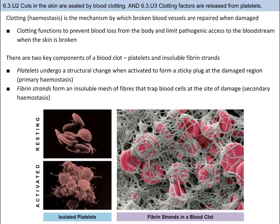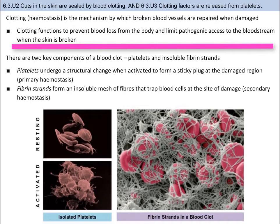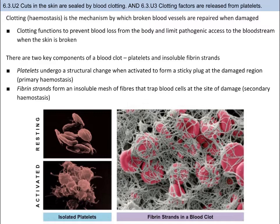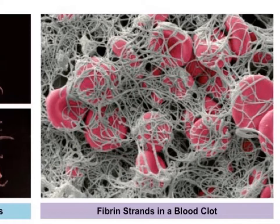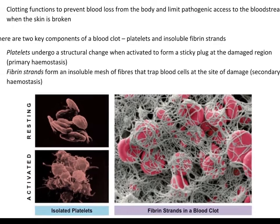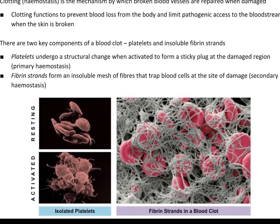So what happens when our first line of defense gets pierced and cuts occur in the skin? Our body works to respond and stop the bleeding. The term clotting is the specific mechanism for how broken blood vessels are repaired when they get damaged. It's important to repair the skin, as the blood system is the transport system of our body — if an invader gets on board, they can move throughout the body. There are two huge benefits to blood clotting when the skin is cut: the first is to prevent blood loss, and the second is to limit the access to the bloodstream by pathogens. The components of blood clots are platelets and insoluble fibrin strands. When platelets come across a ruptured vessel, a series of events called the coagulation cascade occurs. When activated, platelets undergo a structural change, becoming sticky, as well as releasing clotting factors.